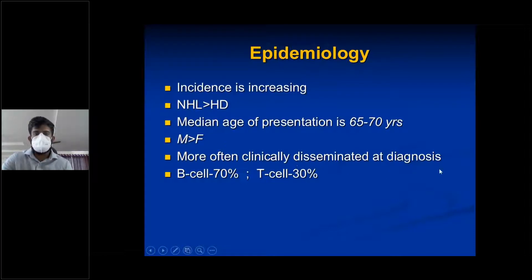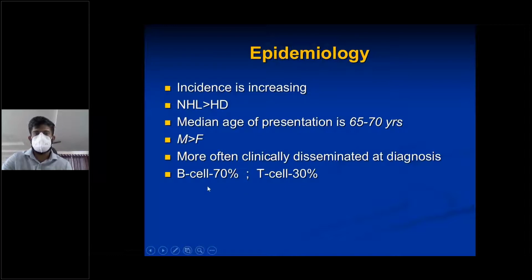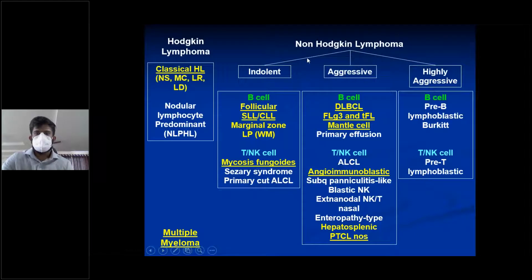NHL is more often clinically disseminated at diagnosis — it's not usually at stage 1 or stage 2, but usually at stage 3 or stage 4. B-cell is 70% and T-cell is 30%; B-cell lymphomas of NHL are more common.